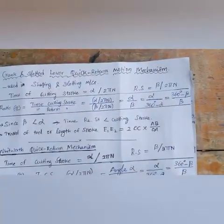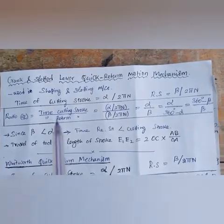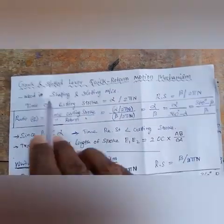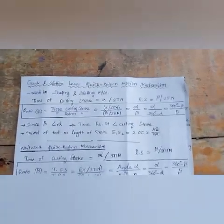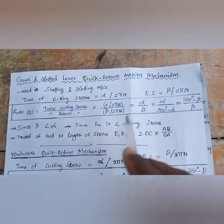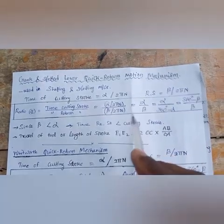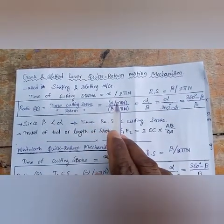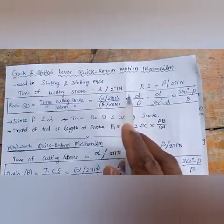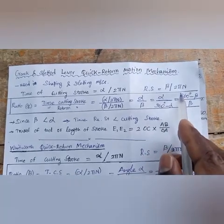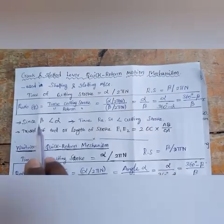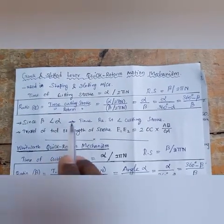The crank and slotted lever mechanism is used in shaping and slotting machines. The time of cutting stroke equals alpha divided by 2πN, and the return stroke equals beta divided by 2πN. Since beta is less than alpha, the time of return stroke is less than the cutting stroke.